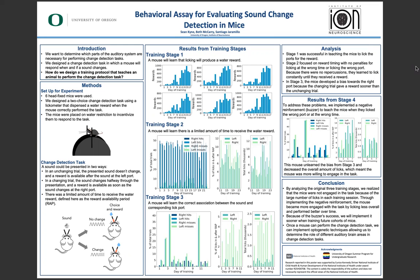To do this, I designed a two-choice change detection task that would present a sound to the animal in one of two ways. In an unchanging trial, the presented sound does not change and a reward is available to the mouse after the sound at the left port. Then, in a changing trial, the sound changes halfway through the sound presentation and a reward will be available after the sound changes at the right port.